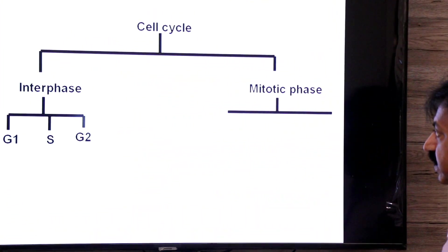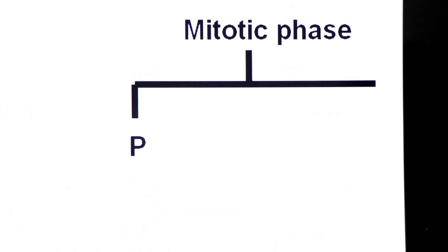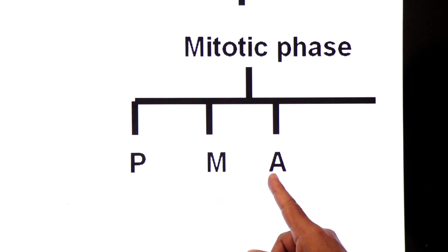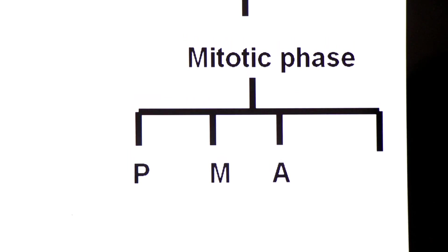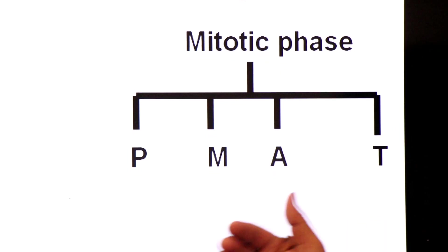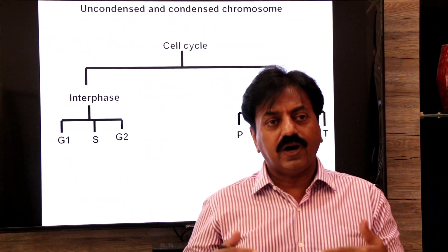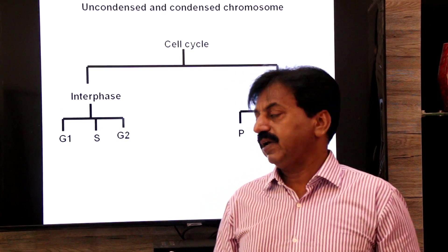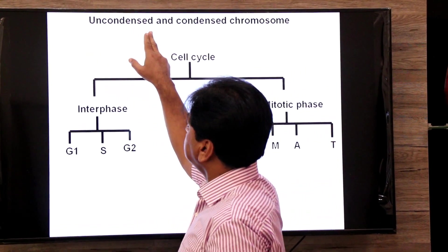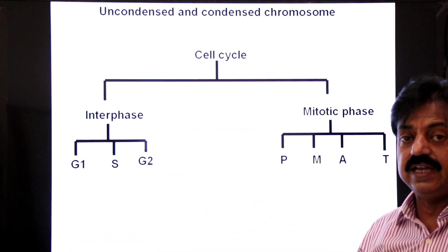Mitotic phase ke 4 phases hain: first prophase, second metaphase, third anaphase, and fourth telophase. Sister chromatids bante hain interphase mein, aur un sister chromatids ko alag karne ke liye hota hai mitotic phase. During interphase we study uncondensed chromosomes, and during mitotic phase we study condensed chromosomes.